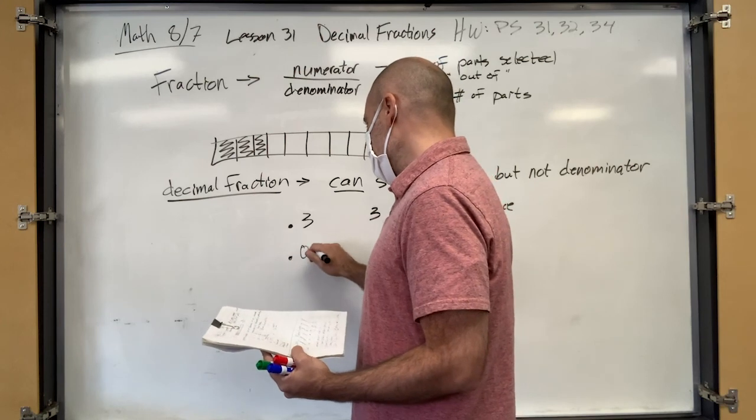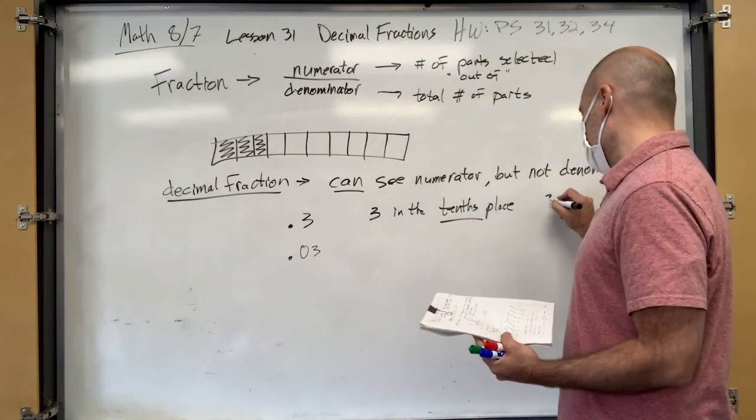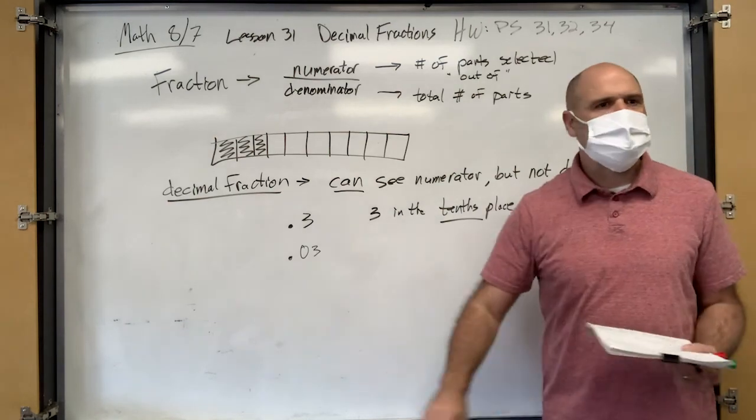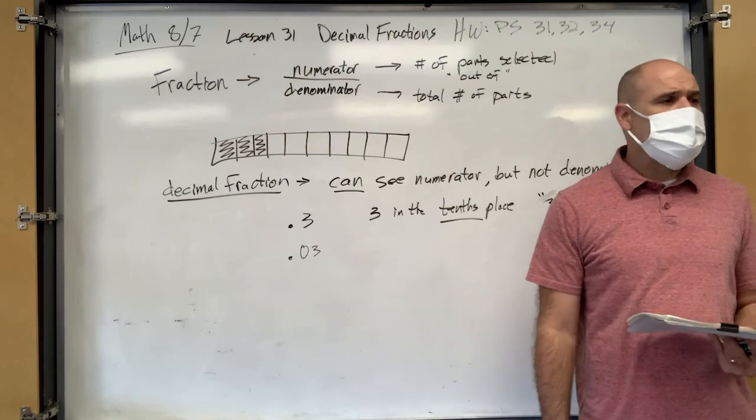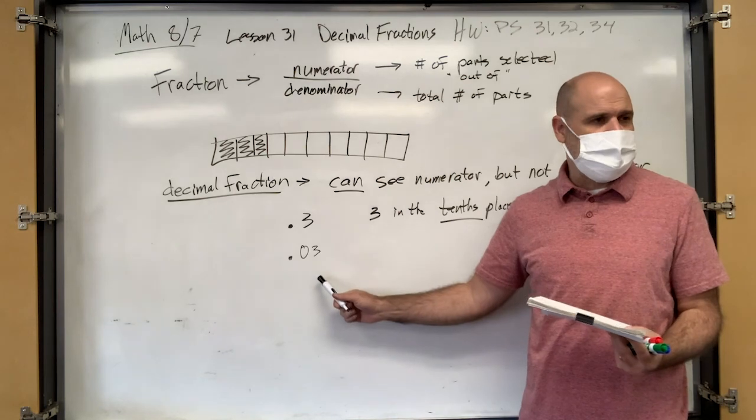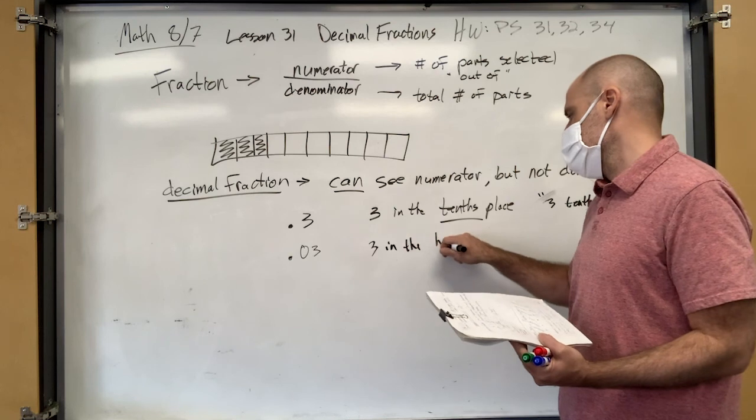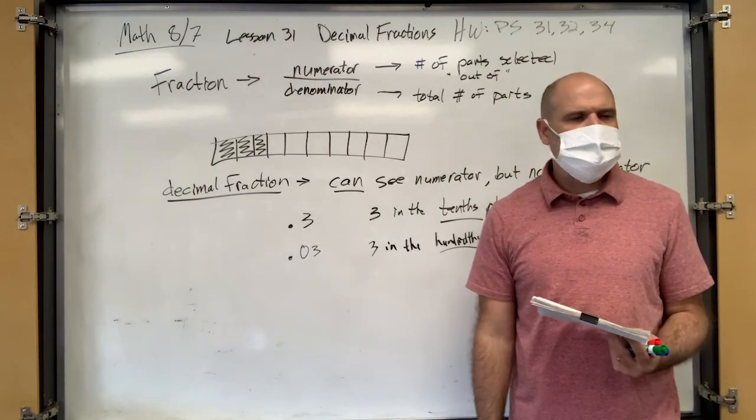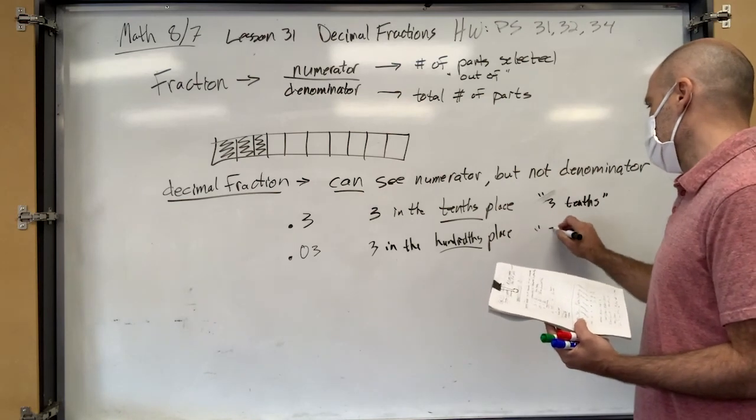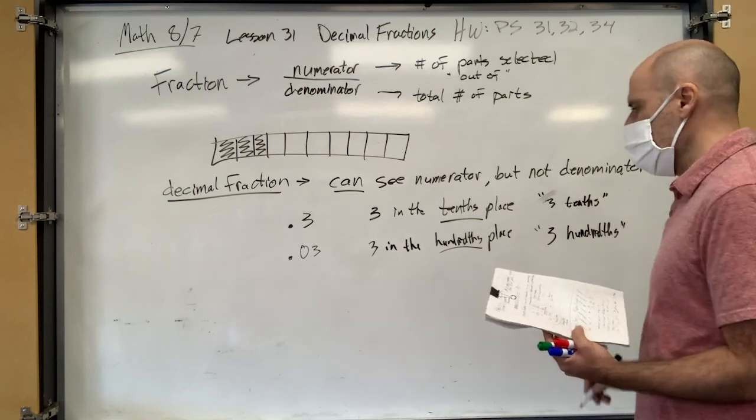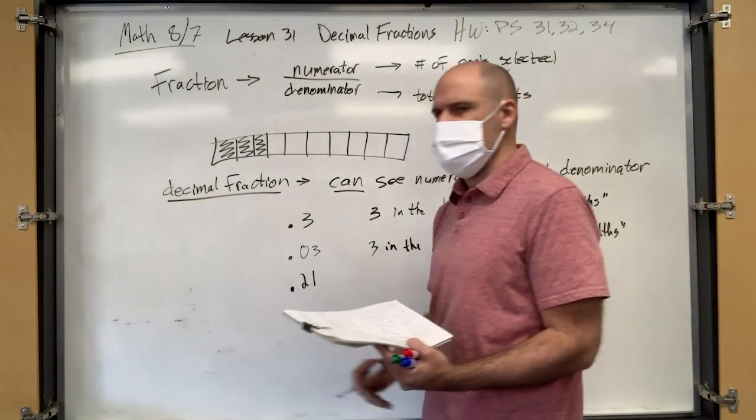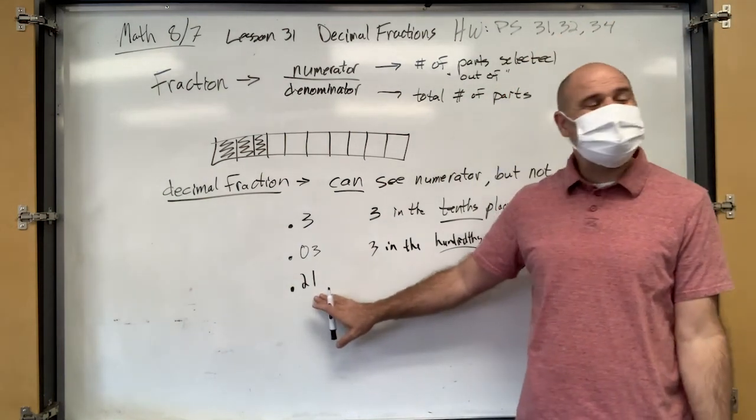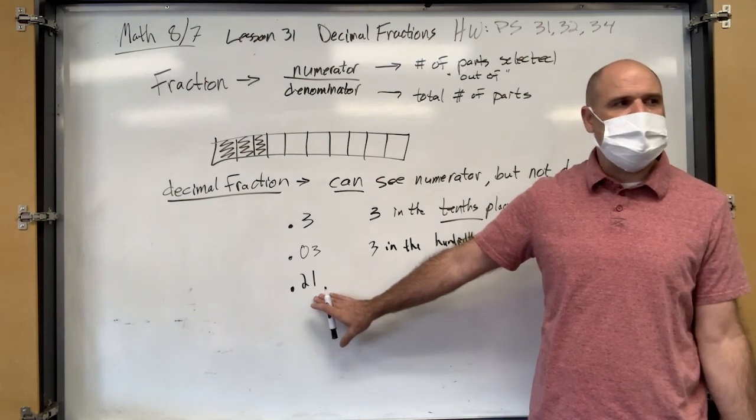What about this? How do you say that? Three tenths. How do you say this, Hunter? Three hundredths. Three hundredths. So see how that three is in the hundredths place. So we say three hundredths. What about this one? How do you say this fraction? Twenty one hundredths. Right? So twenty one. It ends in the hundredths place. So you have to say twenty one hundredths.